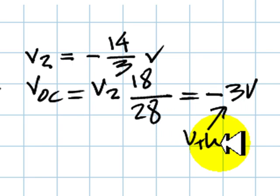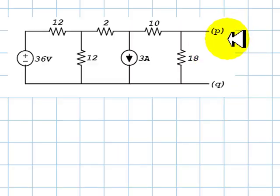And that is the VOC that we are looking for. Half of the question. The other half is finding RTH. To find RTH, we kill the sources.